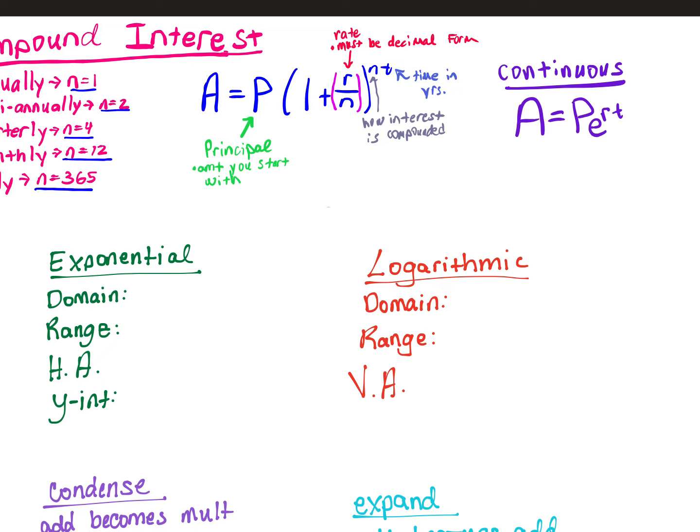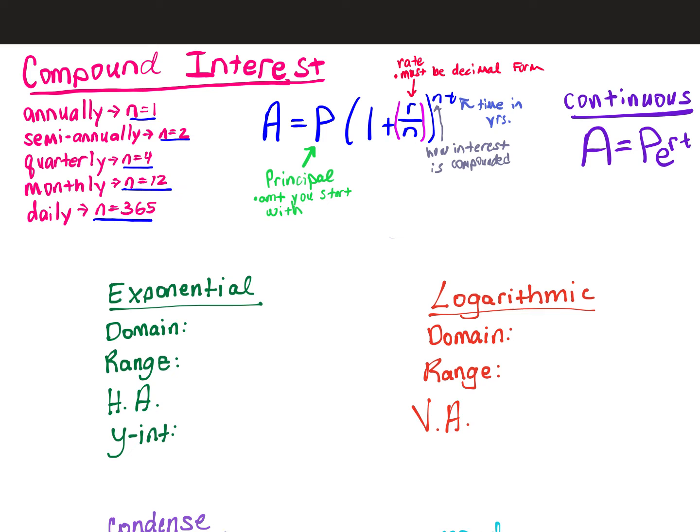Your test is on 4-1 to 4-5. This first sheet goes over all of your ins and outs of 4-1 to 4-3 — all of the stuff that you should know.